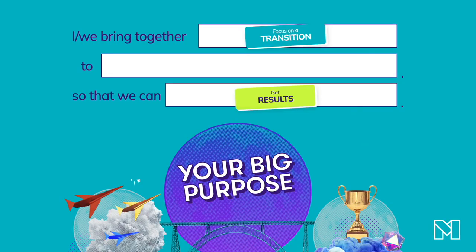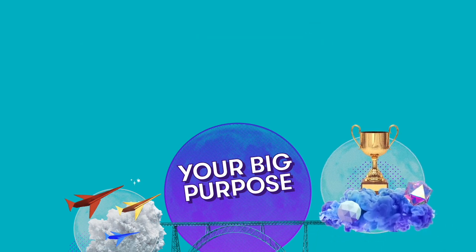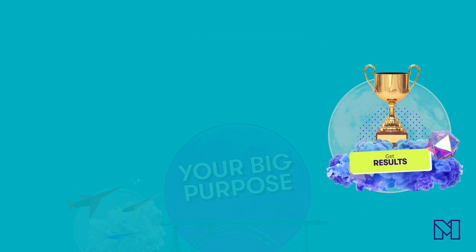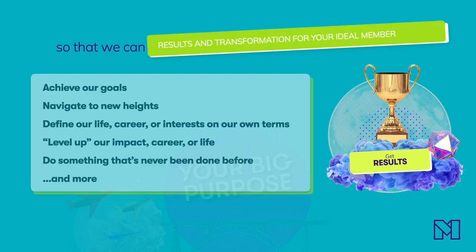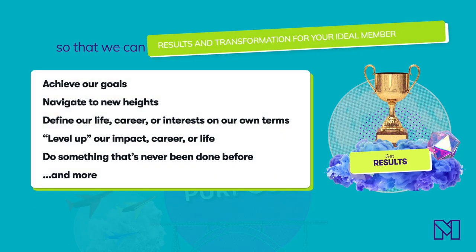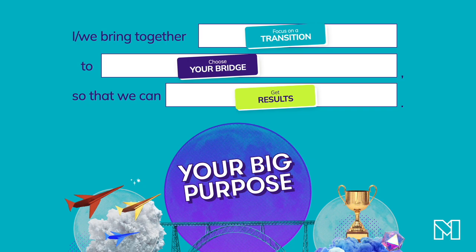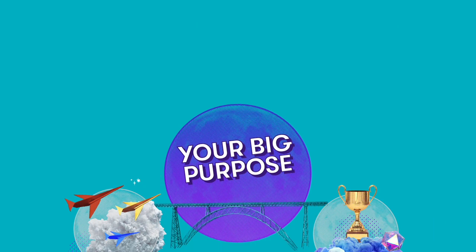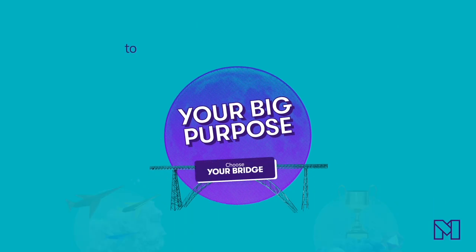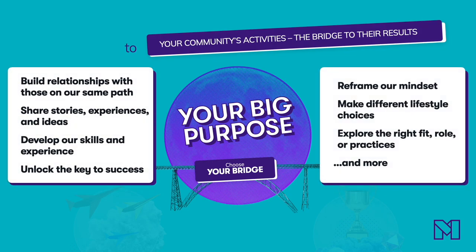Next, we're going to skip to the other end of the big purpose and define the results. Why are you bringing people together? What will you be able to achieve together? What are the results that you and your members want? Maybe it's to gain a new skill, see success in something, or level up in some way. And lastly, there's the bridge — basically what you're going to be doing in your community to help your members make the transition to achieve the results you're all working towards. Maybe your focus will be on learning and teaching, or sharing stories and experiences.